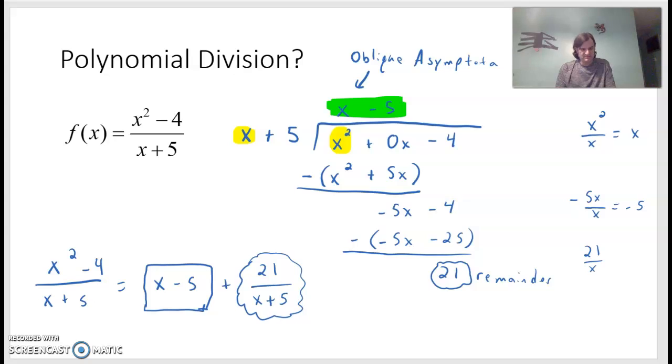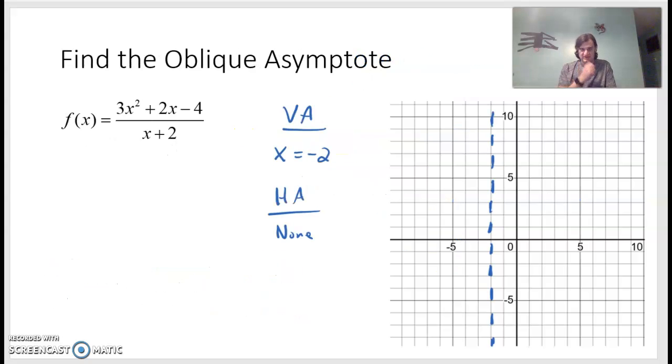We're going to use polynomial division to do that. Now we've been through some examples where we found the vertical asymptote and the horizontal asymptote. A couple things here. If you have a horizontal asymptote, you can't have an oblique. So we don't need to look at everything, but we're going to look at one in particular because we had this function: 3x squared plus 2x minus 4, all over x plus 2. And the reason this is interesting is because the degree of the numerator is one more than the degree of the denominator.